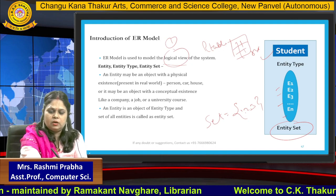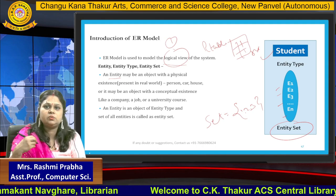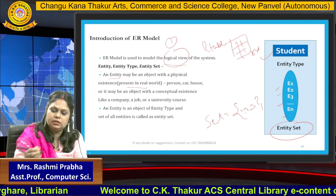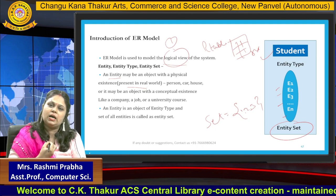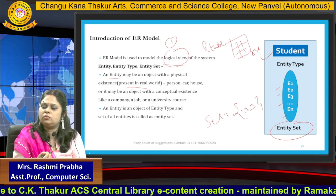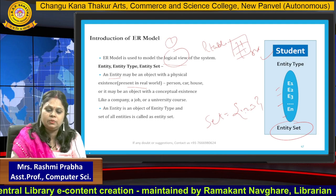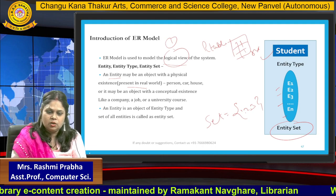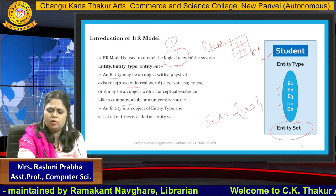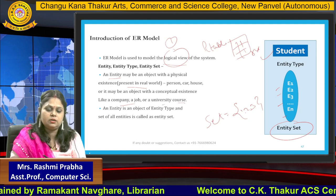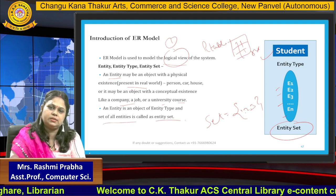Now, just now we have seen what is an entity. An entity may be an object with a physical existence — which is present in the real world — like a person, car, or house. If you are watching me, I am the entity for you. So it is an object which has some existence, like a company, a job, a university, a course, and so on. An entity is an object of an entity type, and a set of all entities is known as an entity set.